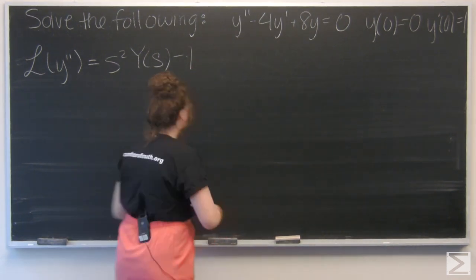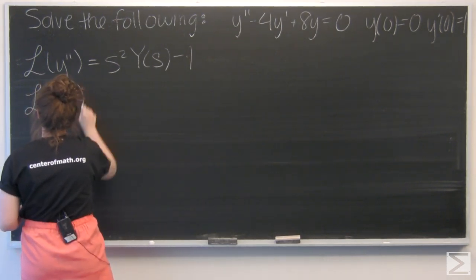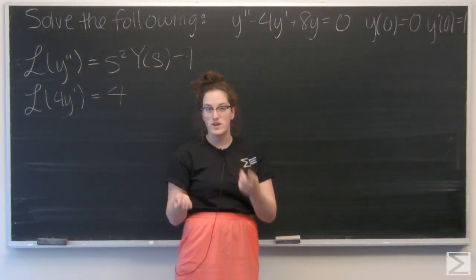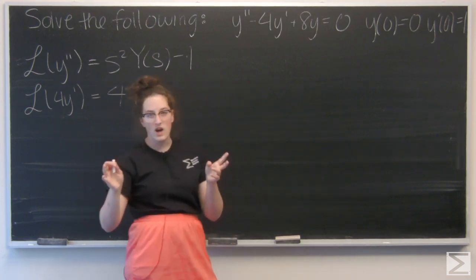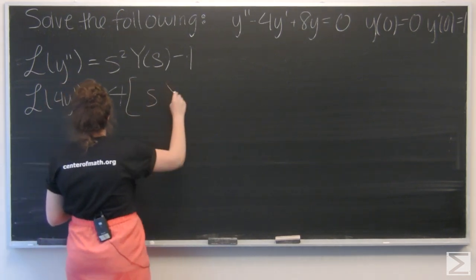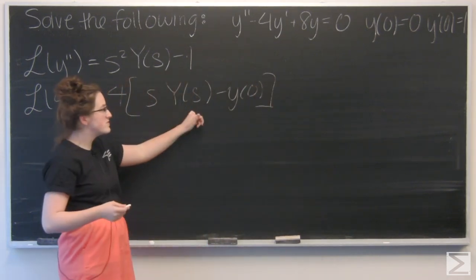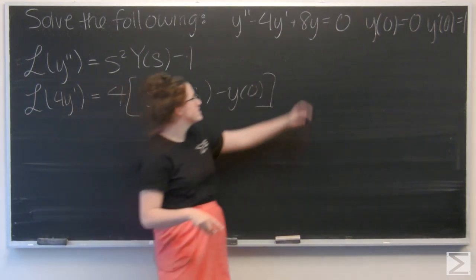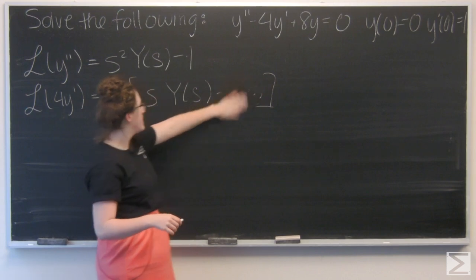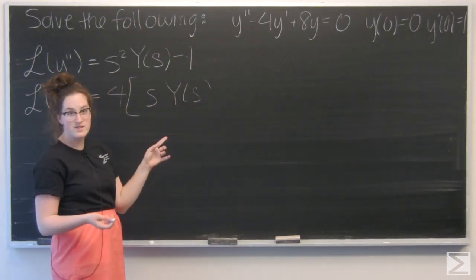All right, now let's do 4y'. So 4 is a constant and it's just going to carry through, but again I have a general formula for how to find the Laplace transform of a first derivative. And that is s times Y(s), which is again the Laplace transform of y, minus y(0). While y(0) is 0, so this term drops out. And the Laplace transform of 4y' is just 4s Y(s).